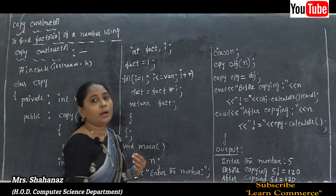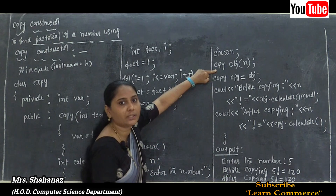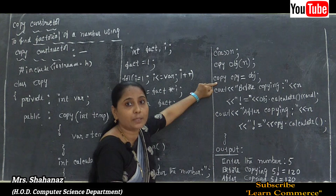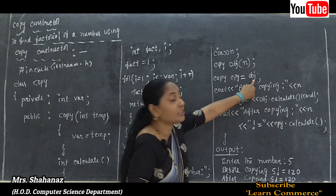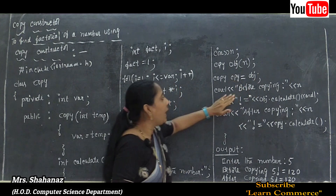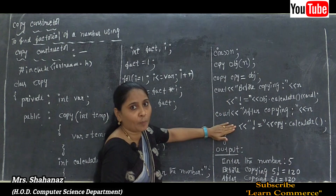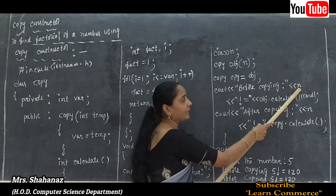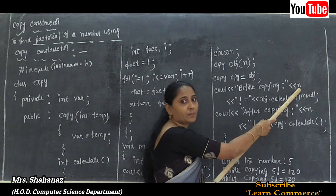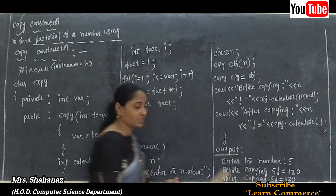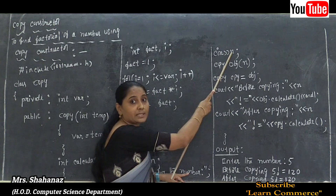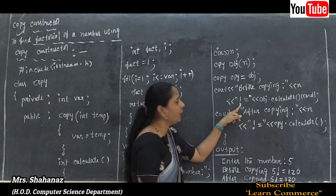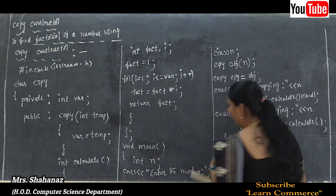The first line declares object 'obj' with argument n. The second line declares object 'cpy' using the assignment operator to copy from obj. To show the values before and after copying, we use cout. The statement: cout << 'Before copying' << n << '---' << obj.calculate(); displays the value before copying.